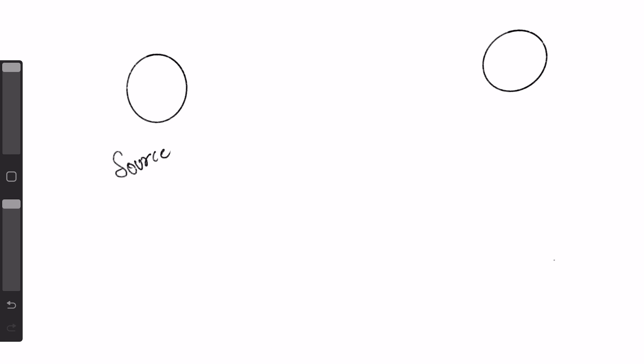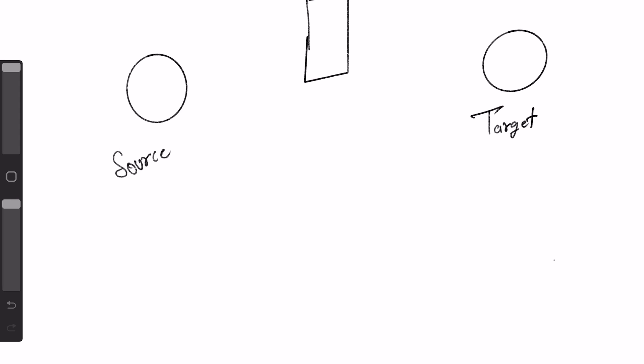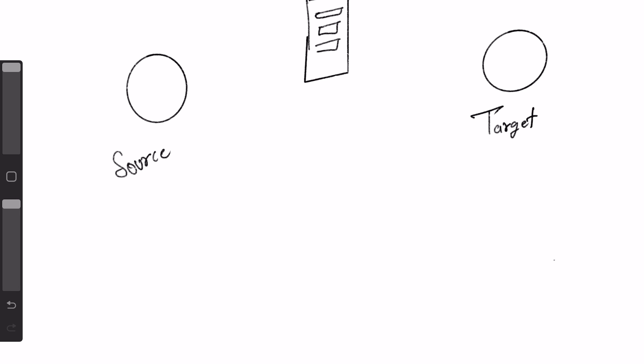Let's understand this with a diagram. There is a source from where you need to get data, and a target where you're planning to receive it. The data from the source to target won't come directly — there is a server in between. The source sends data to the server, and then the target needs to receive data from the server by hitting an API, and the server sends data back in the API response.